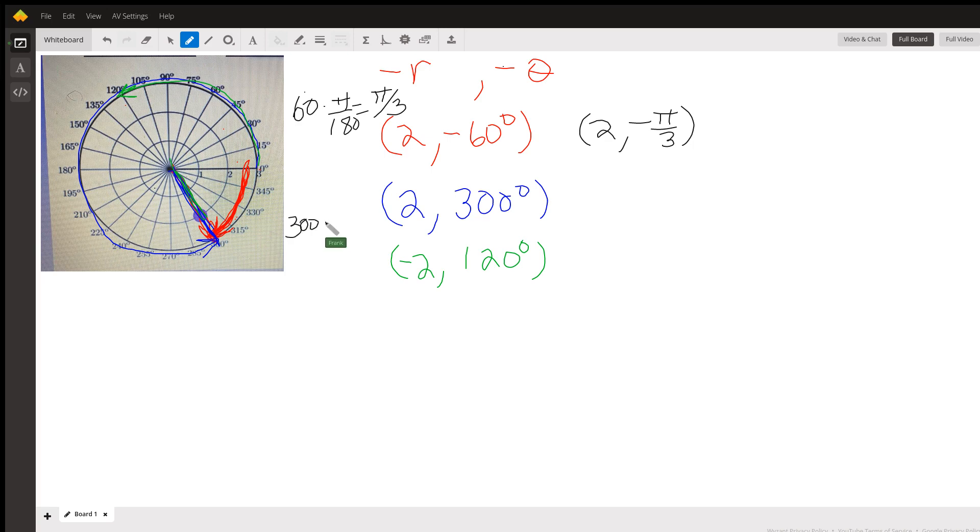300 degrees. Again, you may have these memorized. I have to do the conversion because right now I don't. 4 times, 2 times 6, 6 times 5 is 30, 6 times 3. So this is 2 and then 5 pi over 3 radians. That's another way to do it.